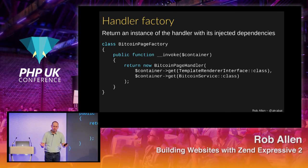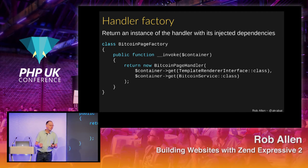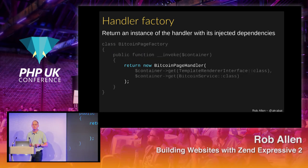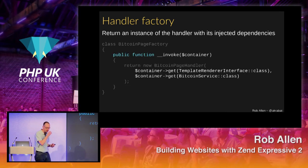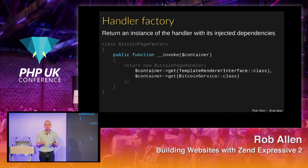A factory is a fairly complicated word — we use it to make ourselves sound clever. It simply means we return a new instance of a class; that's all it means. It is an __invoke method, and I return a new BitcoinPageHandler — my action class. I pass in the dependencies that the constructor needs, retrieving them from the container. The container will not construct them unless needed, so I'm avoiding creating classes I won't necessarily need for this particular request.